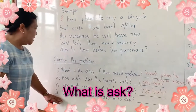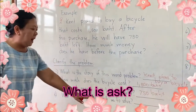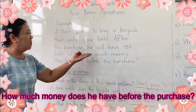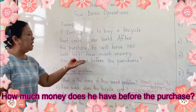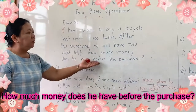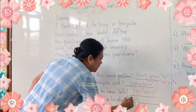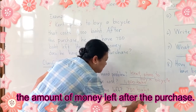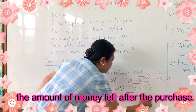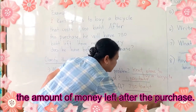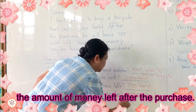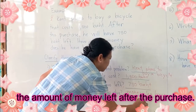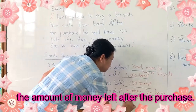Then next, what does the problem ask us to solve? What is asked? How much money does he have before the purchase? The question is the amount of money he had before the purchase.